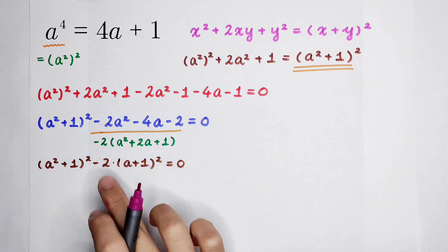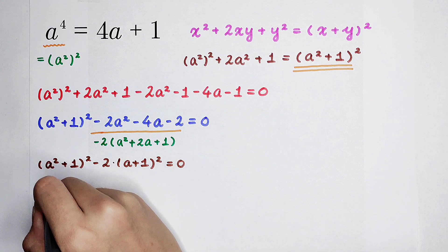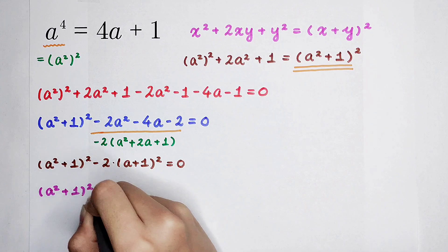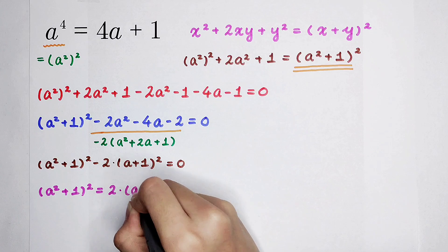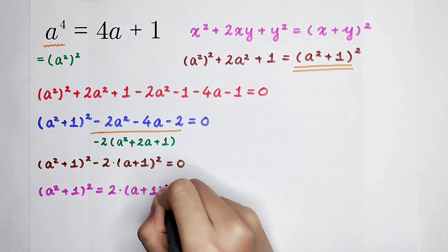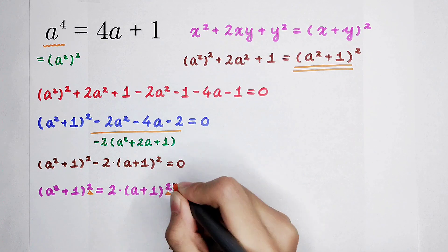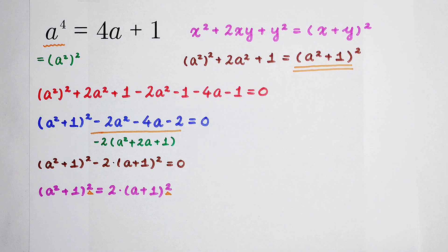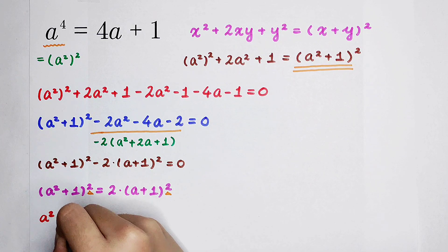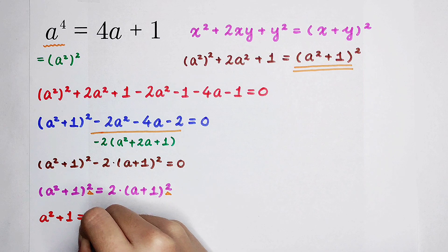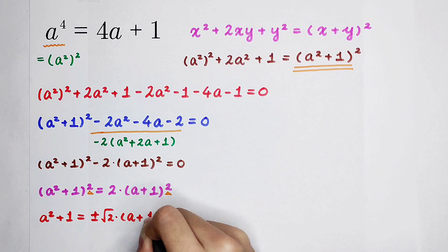Now, I'm going to add 2 times a plus 1 all squared on both hand sides and it will become this. Pay attention. Here appears a squared here also. What can I get? I can get that a squared plus 1 is equal to positive or negative square root of 2 and then times a plus 1.